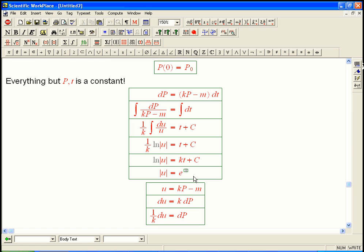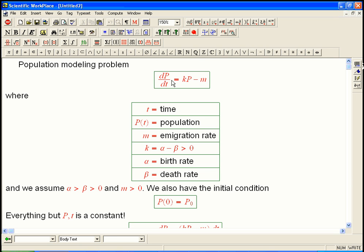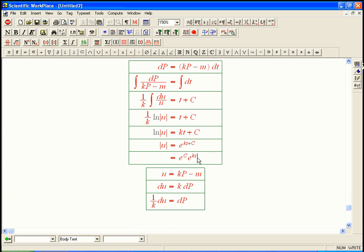So, now I strip this off. It's going to be e to the quantity kt plus C. And, again, that's going to be e to the C times e to the kt. Now, you notice, if you look at how this works with just dP/dt equals kP without the m, it's exactly the same. And it's some weird stuff that's a bit unfamiliar, but it's the same kinds of steps.